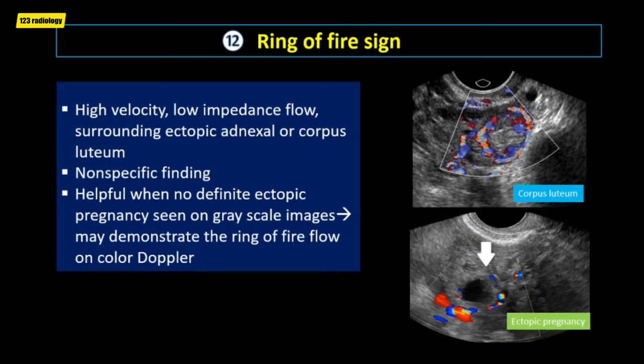The ring of fire sign describes the high velocity, low-impedance flow surrounding an ectopic adnexal pregnancy. Peripheral hypervascularity is a nonspecific finding and may also be seen surrounding a normal maturing follicle or a corpus luteal cyst. Determining whether this flow is within the ovary or outside the ovary is most important to distinguish between an ectopic pregnancy and a corpus luteum. The ring of fire sign is most helpful when no definite ectopic pregnancy is seen on grayscale images, and color Doppler may improve confidence in the diagnosis.